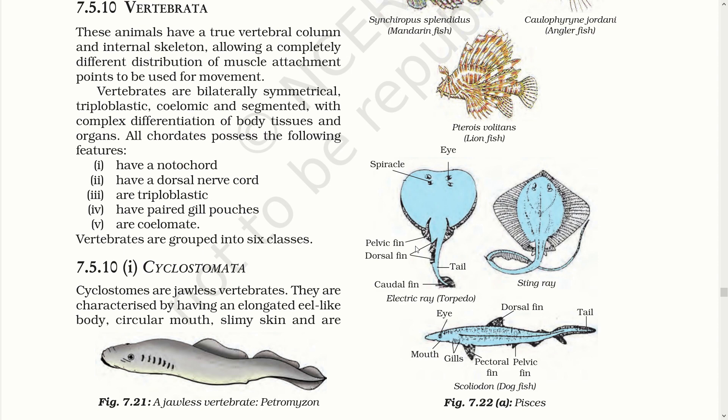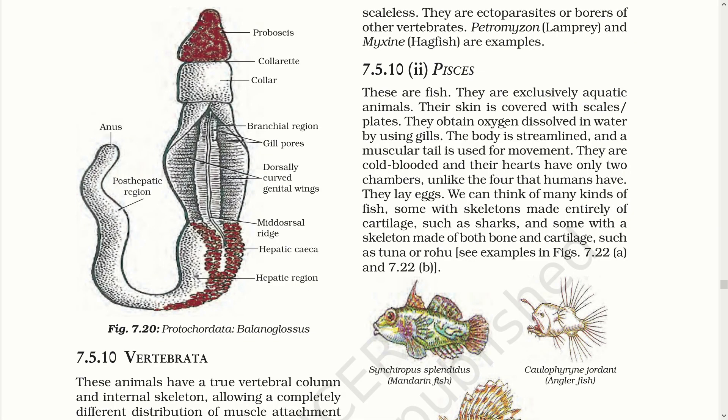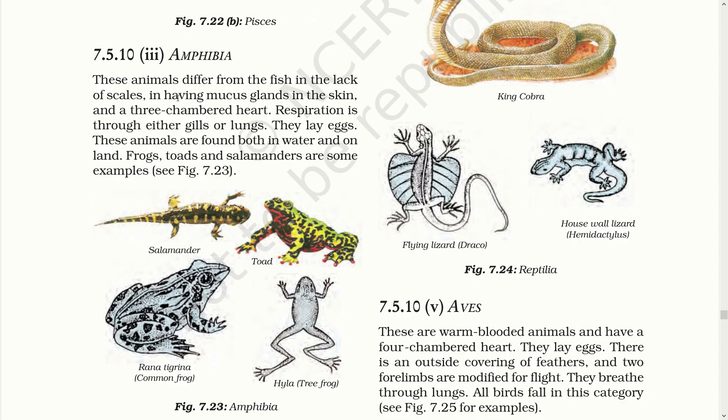In Cyclostomata, these creatures are jawless, meaning they lack jaws like other vertebrates, and they have slimy skin. These are aquatic animals but do not have scales. While Pisces, as we know as fishes, have scales on their skin which protect against predators, parasites and infections. They are cold-blooded animals with a two-chambered heart.